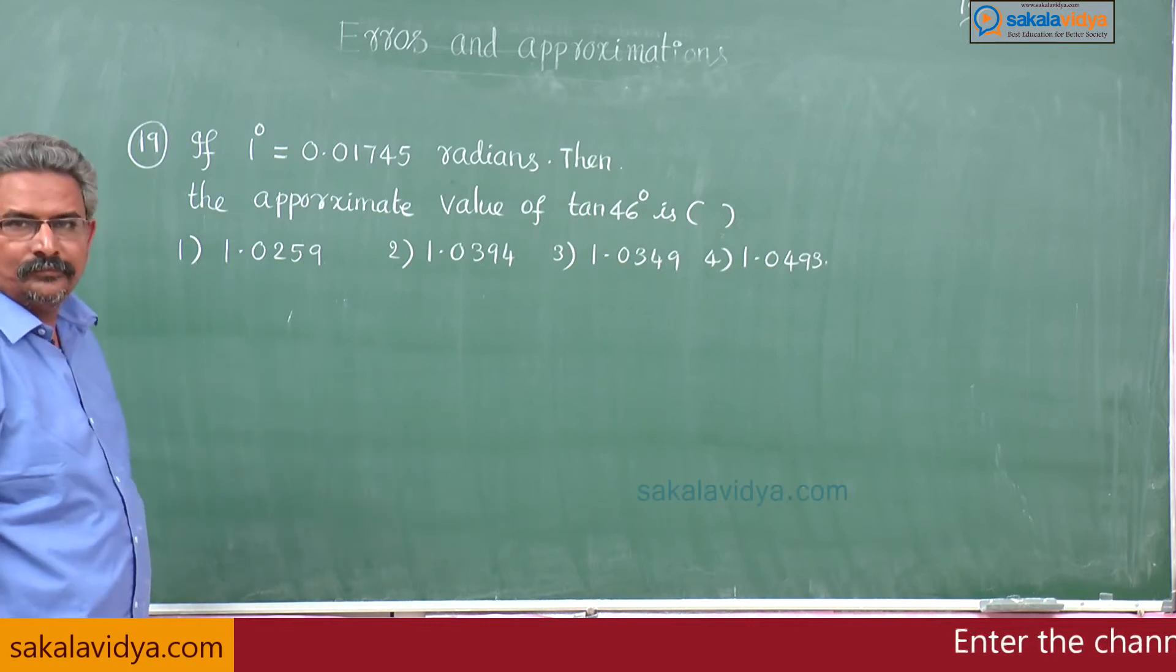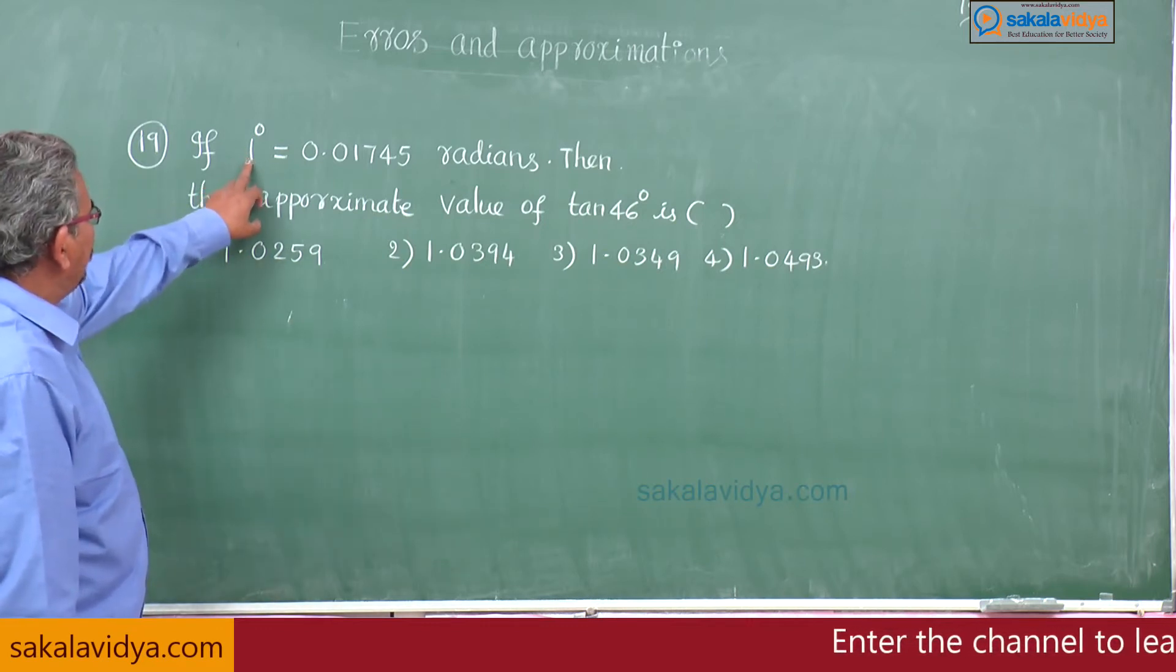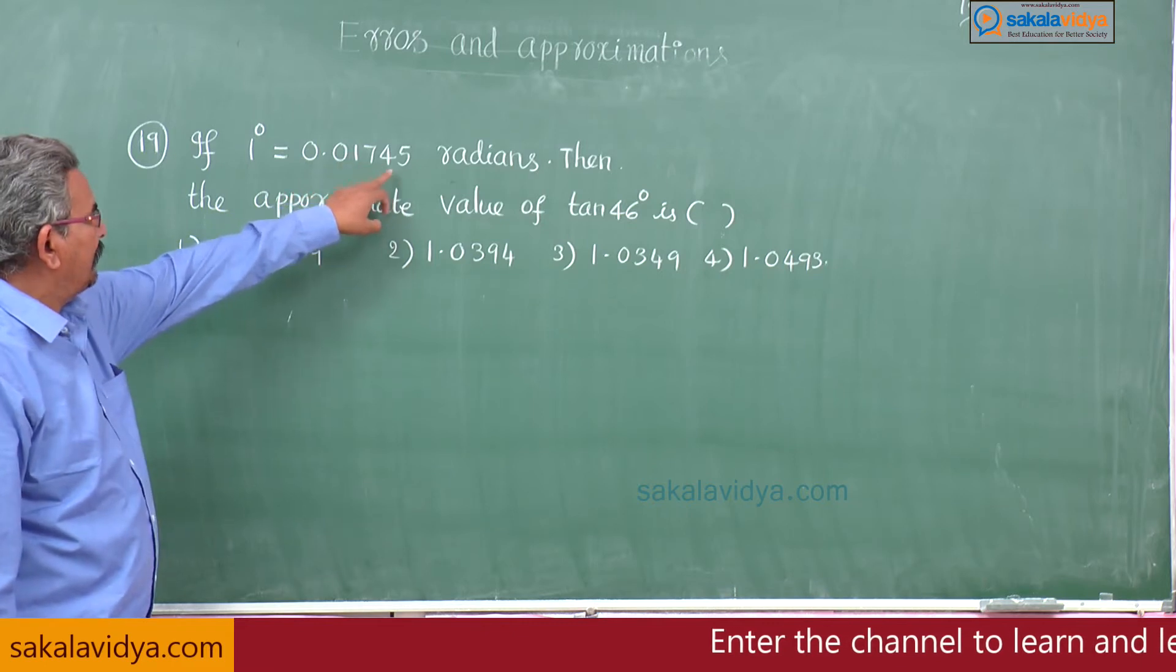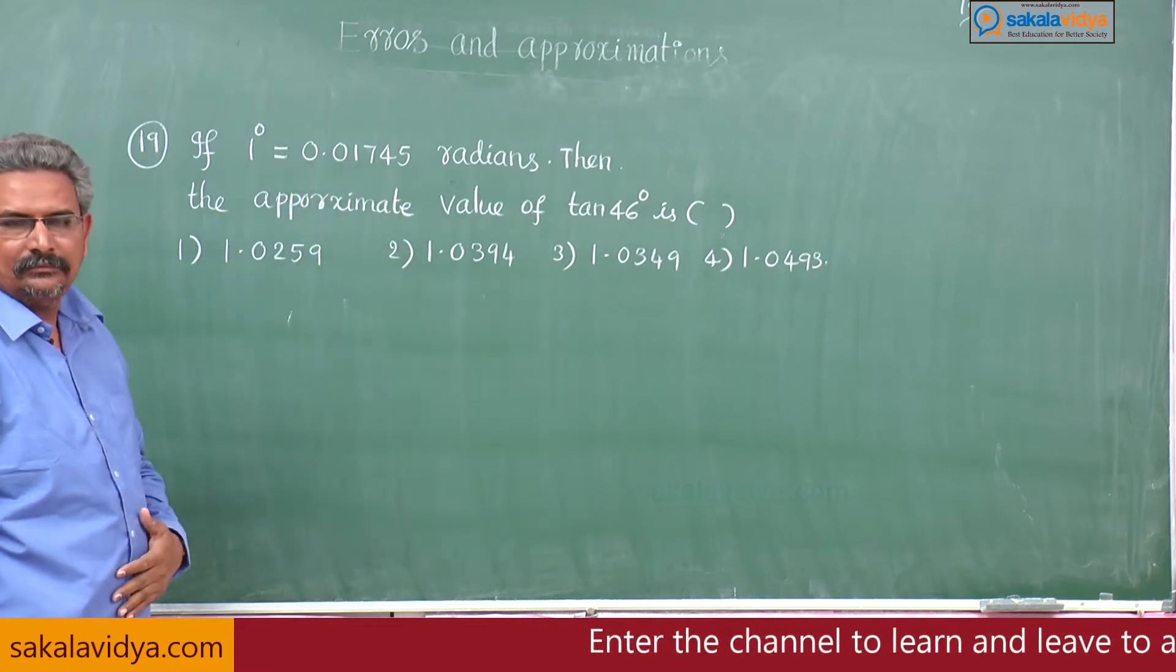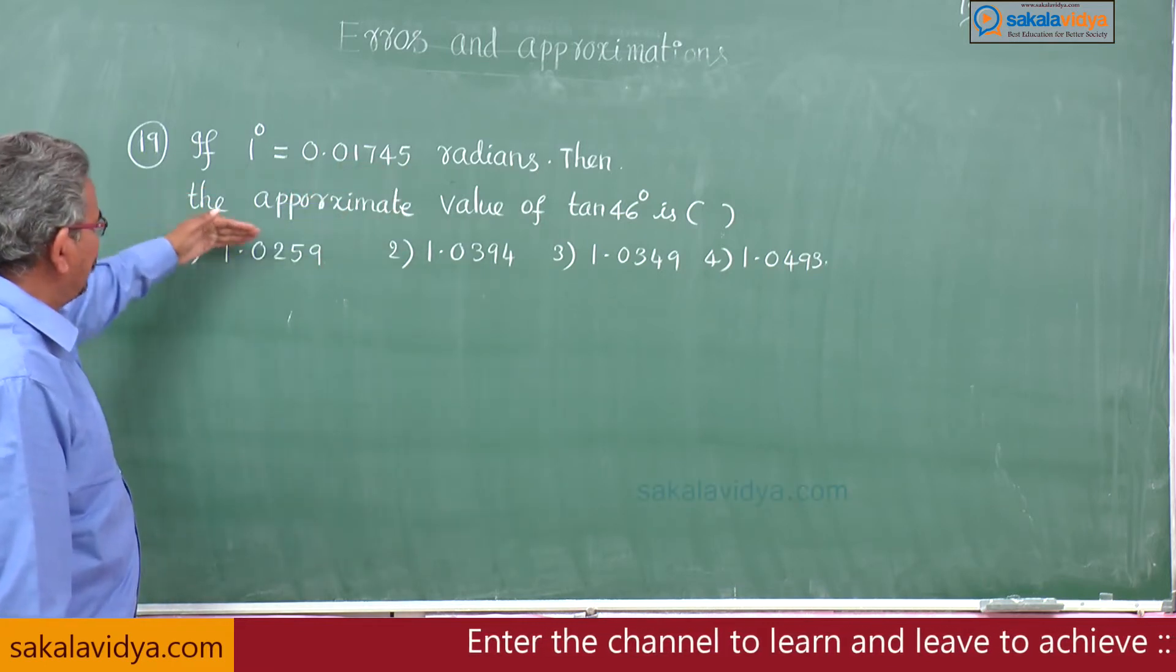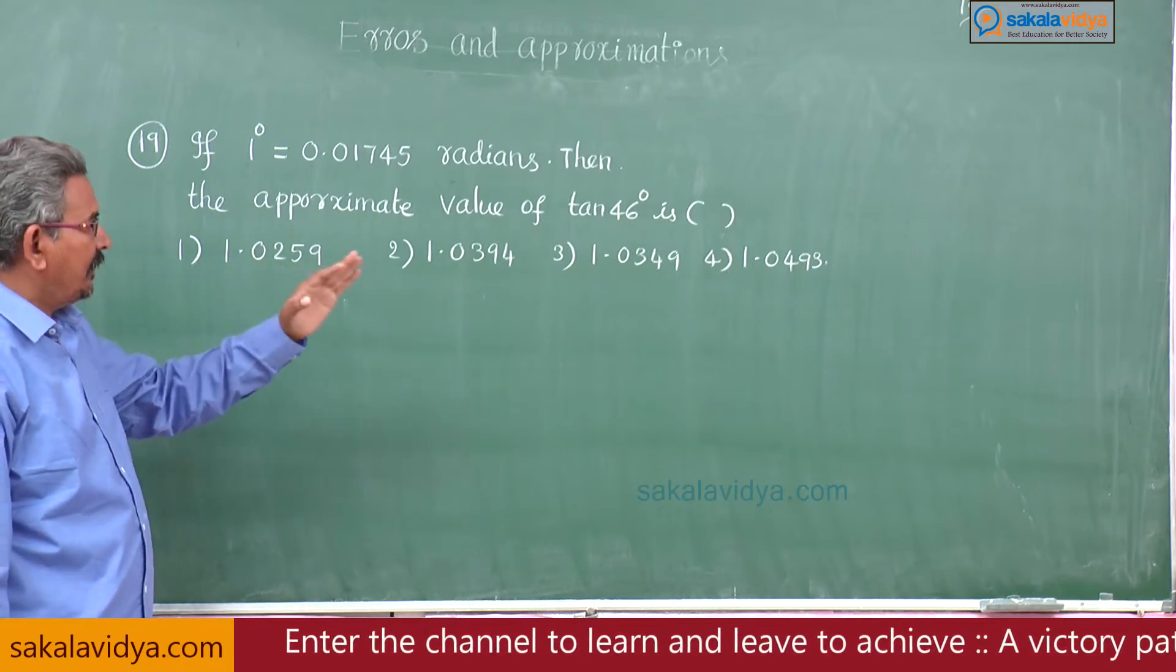Nineteenth problem: if 1 degree is equal to 0.01745 radians, then the approximate value of tan 46 degrees.